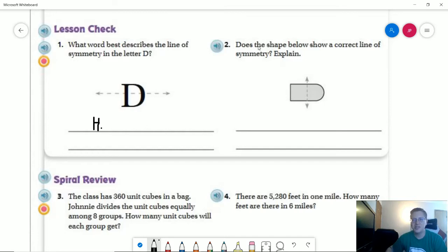And number two, does the shape show the correct line of symmetry? Explain. So it shows a line going through the middle of the shape, but it does not. So no, and the reason being is because we have a curve on this side that we do not have on this side.